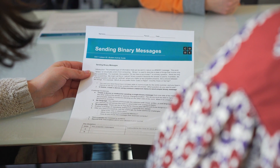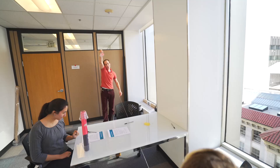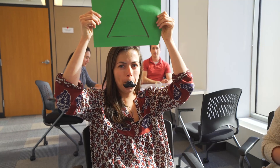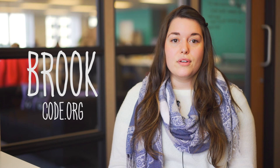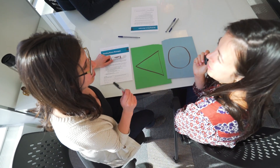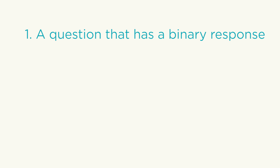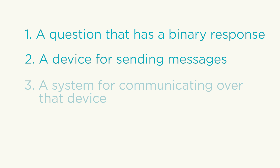In this lesson, your students are going to work in pairs to build a physical device for sending messages back and forth. These devices will communicate binary information, or information that can be represented in two possible ways. In order to successfully communicate with their partners, students will need to develop three things: first, a question that has a binary response; second, a device for sending messages; and third, a system for communicating over that device.